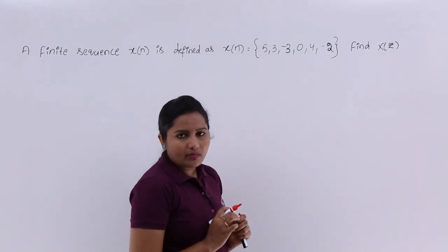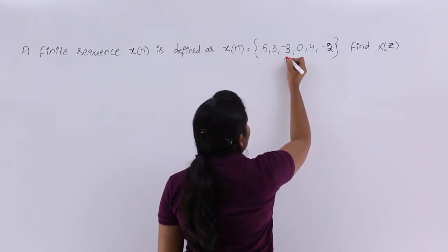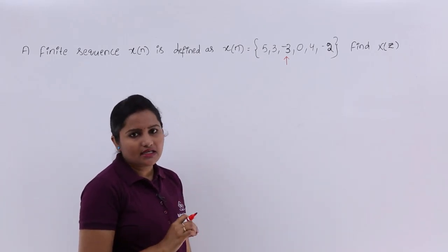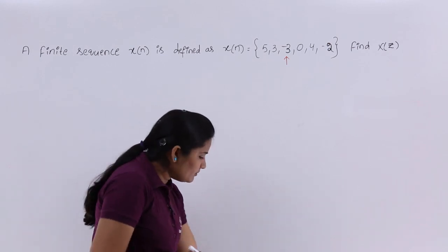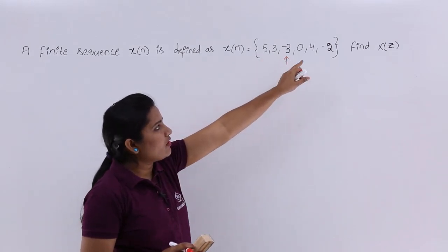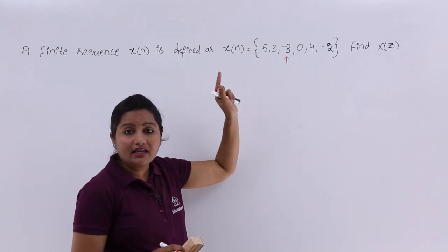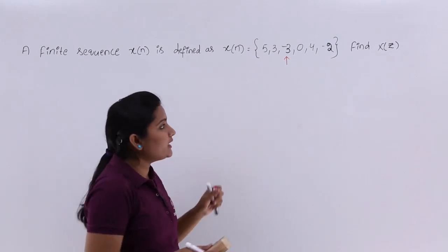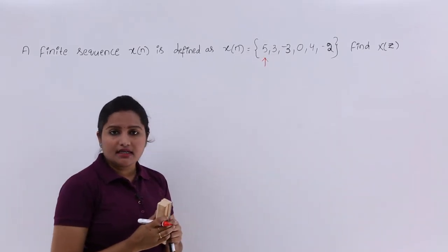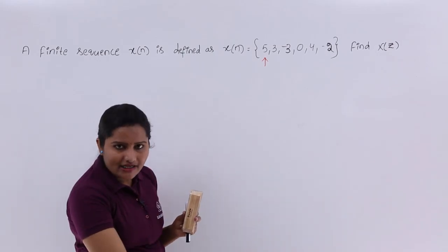Keep in mind: when a sequence is given like this, if they indicate an arrow mark, that arrow mark sample is the sample at n equal to 0. But in this problem they did not mention any arrow mark. If you are not having any arrow mark indicating any sample, then you can treat the first sample as x of 0 — that means you consider the sequence as a fully right-sided sequence.